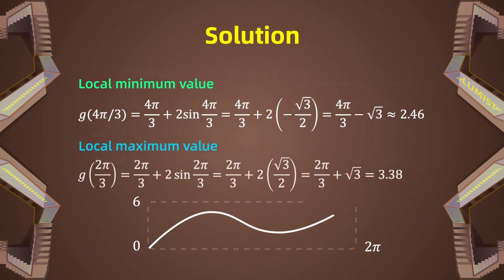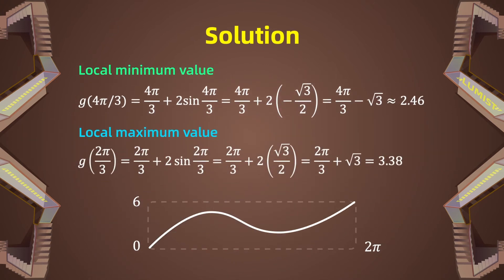Here we have a graph that describes this. As you may see, there is a local maximum at 2π/3 and a local minimum at 4π/3.